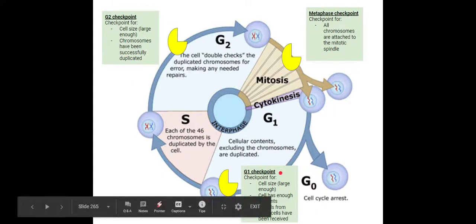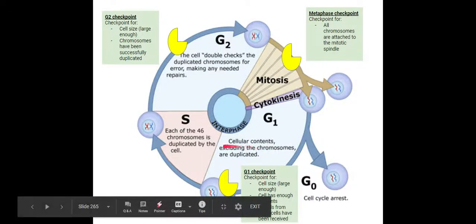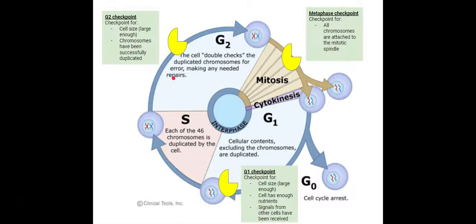At the G1 checkpoint, we are checking that the cell is large enough, the cell has enough nutrients, and signals from other cells have been received. Once this checkpoint has been reached, it can proceed to the next step.